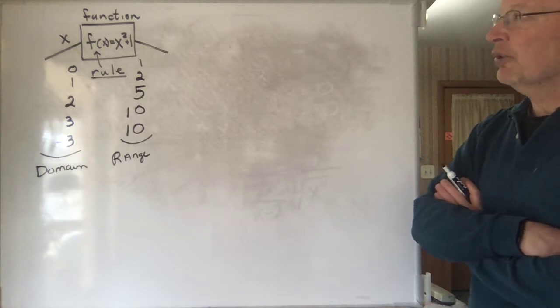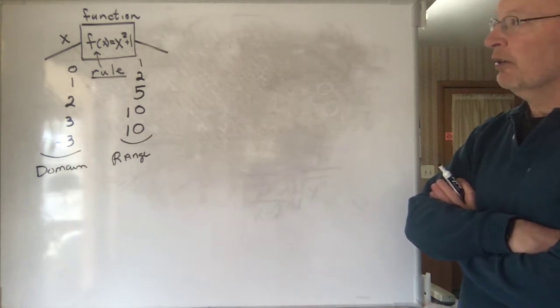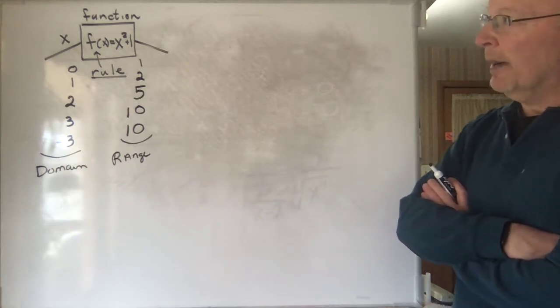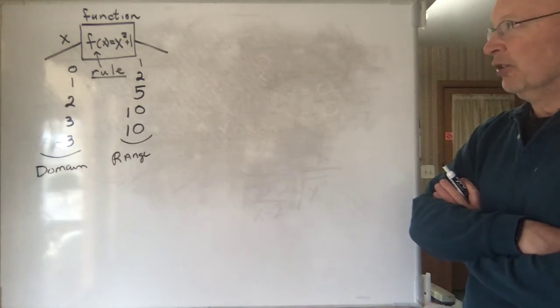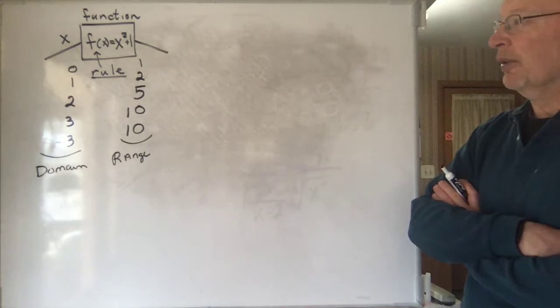As you put in larger and larger numbers, bigger and greater numbers, what happens to the numbers that come out of the function? Do they keep getting bigger and bigger? Do they get smaller? What happens to them?